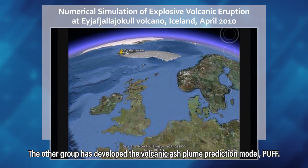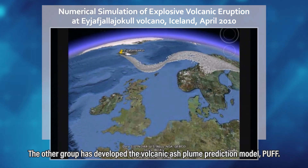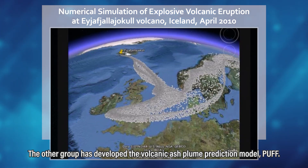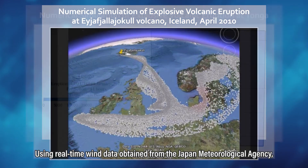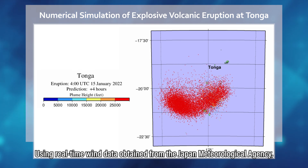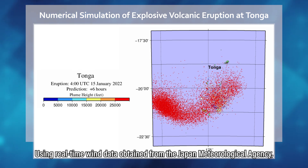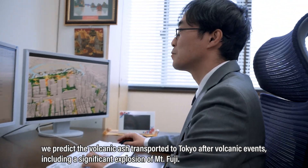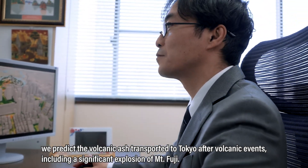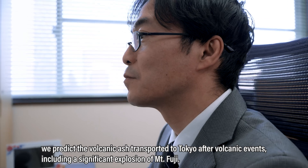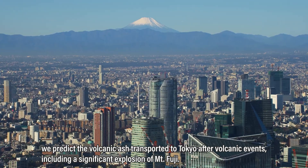The other group has developed the volcanic ash plume prediction model PATH. Using real-time wind data obtained from the Japan Meteorological Agency, we predict volcanic ash transported to Tokyo after volcanic events, including a significant explosion of Mount Fuji.